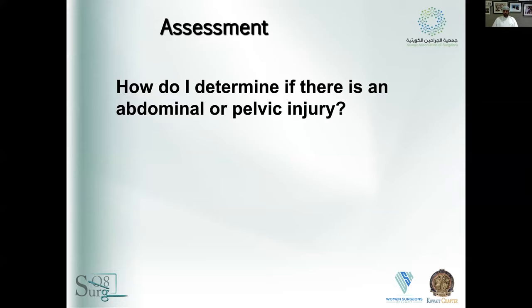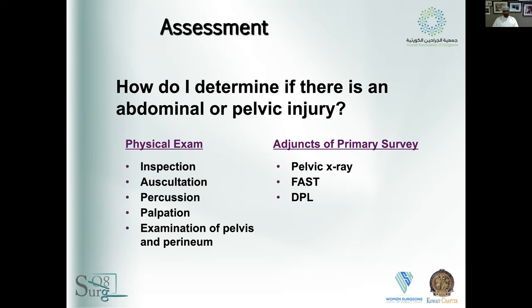As Dr. Al-Kadi covered the ATLS principles, we do the ABCs. Assessment really depends on physical examination and adjuncts of the primary survey. Physical examination is: look, feel, and listen. The adjuncts we use to assess abdominal or pelvic injuries are the pelvic X-ray, FAST — focused assessment sonography for trauma — now thought of more as an extension of your hand, an extension of physical examination.